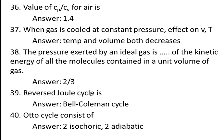Thirty-ninth question: the reverse of the Joule cycle is the Bell-Coliman cycle. The Joule cycle is also called the Brayton cycle. Fortieth question: Otto cycle consists of two isochoric (constant volume) processes and two adiabatic processes.